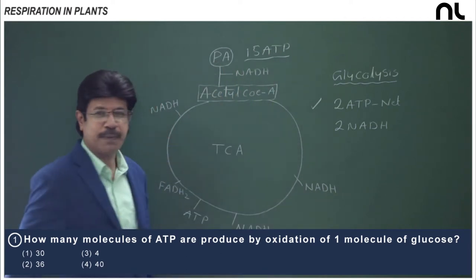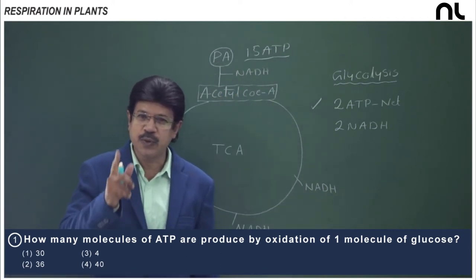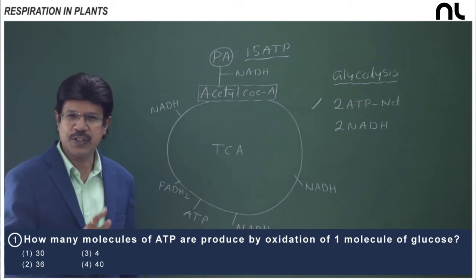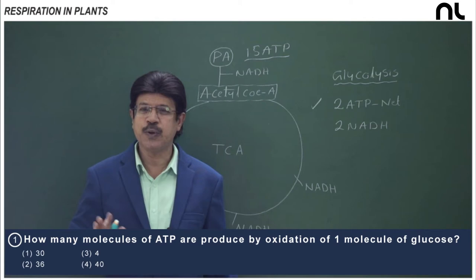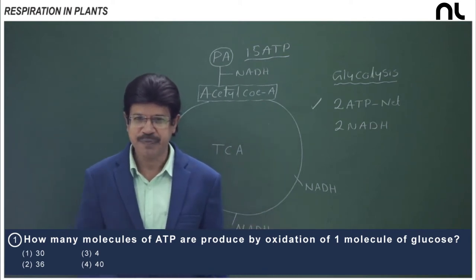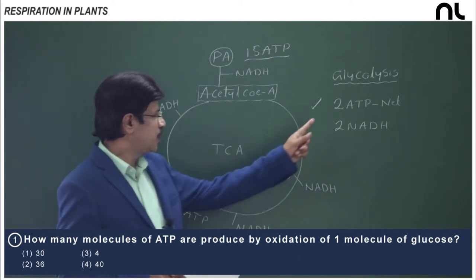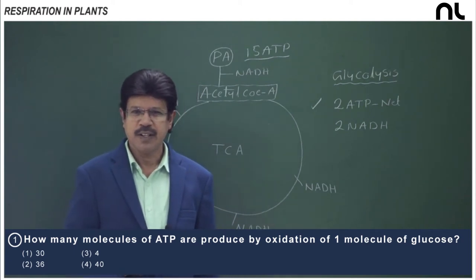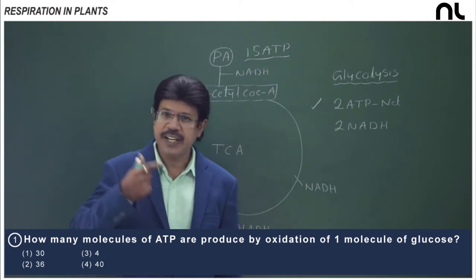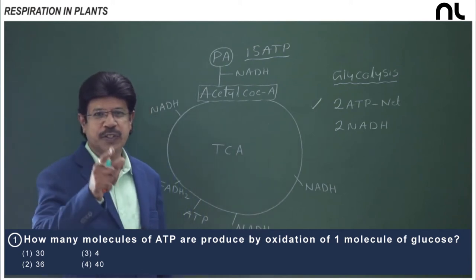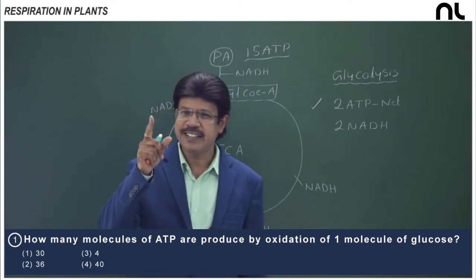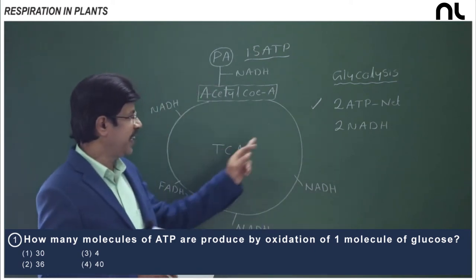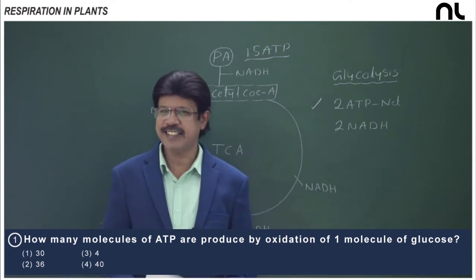Oxidation of one pyruvic acid in the mitochondria yields 15 ATP. The other pyruvic acid contributes another 15 ATP, for a total of 30 ATP. Additionally, the 2 NADHs formed in glycolysis must enter the mitochondria for oxidation, contributing another 6 ATP. So the mitochondrial total becomes 30 + 6 = 36 ATP.